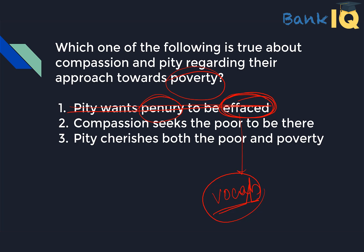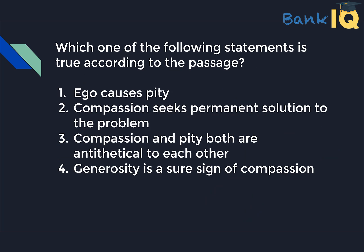Which one of the following is true about compassion and pity regarding their approach towards poverty? 'Pity wants penury to be effaced' — effaced means to be removed. You must know the vocabulary to understand the answer choices. Pity wants penury to end? No — compassion wants penury to end. 'Compassion seeks the poor to be there' — no, compassion does not want begging. 'Pity cherishes both the poor and poverty' — absolutely correct. Pity celebrates and cherishes both the poor and poverty. This is the correct answer.